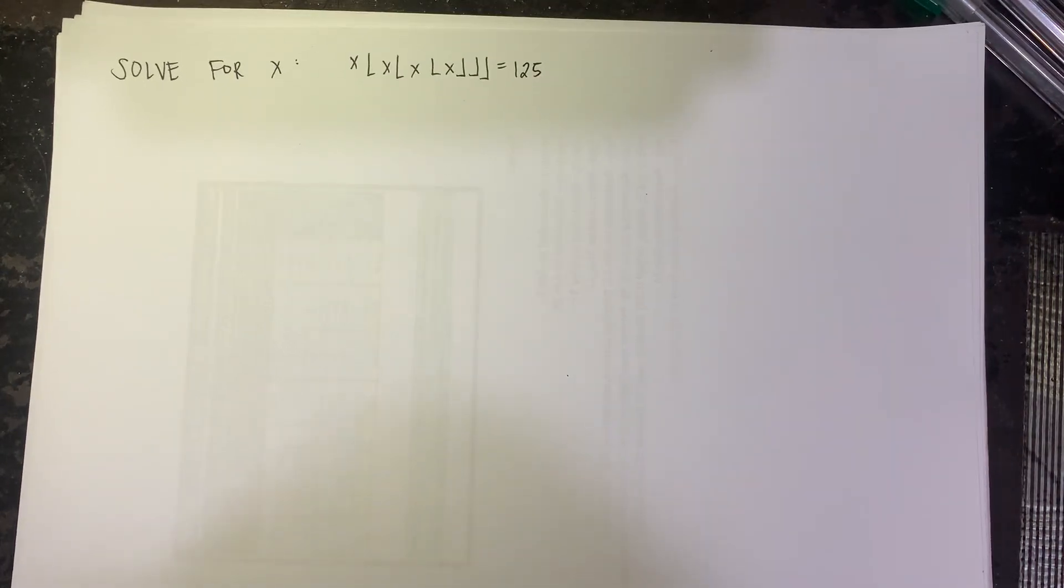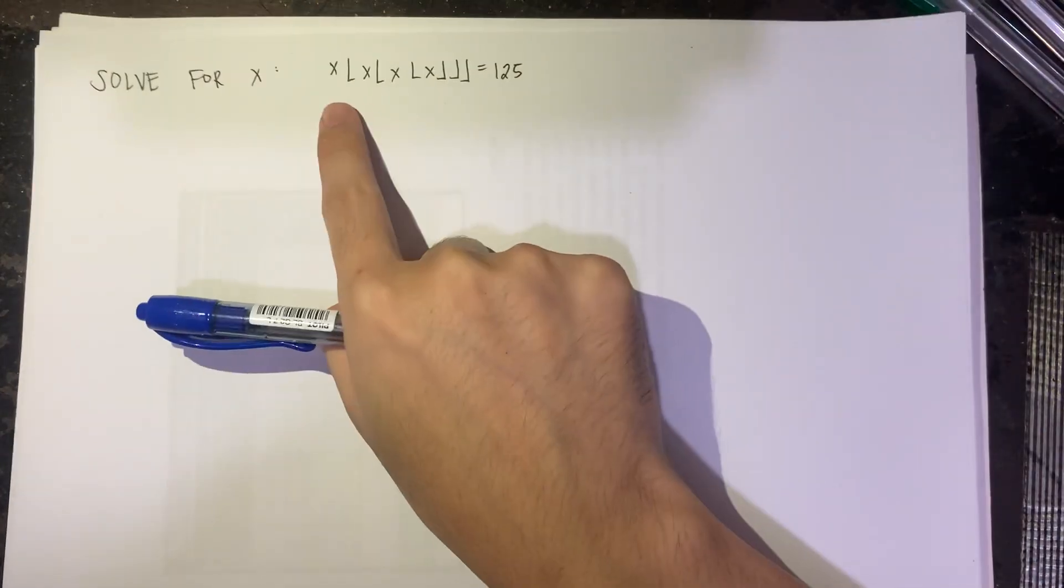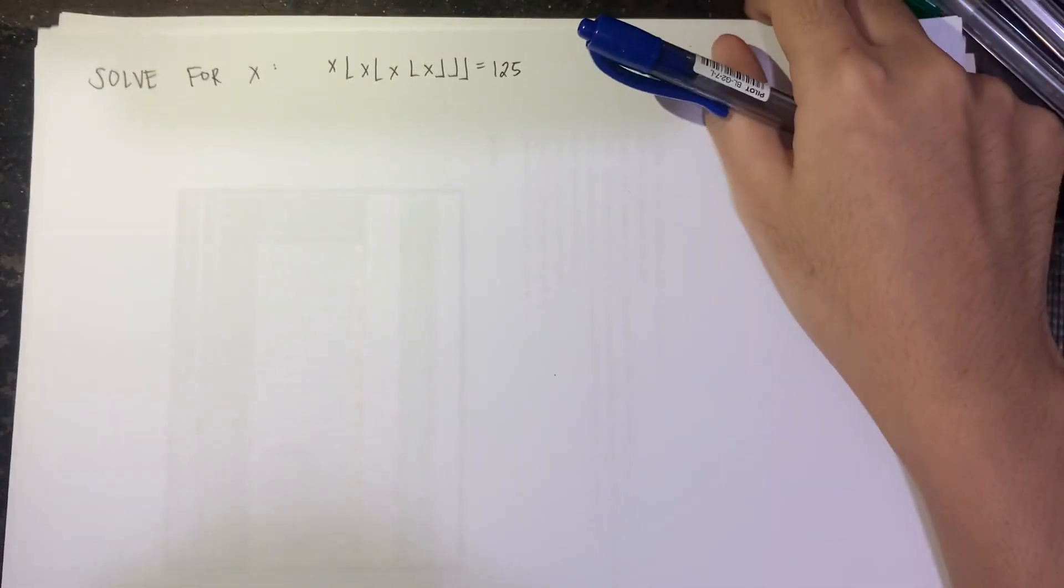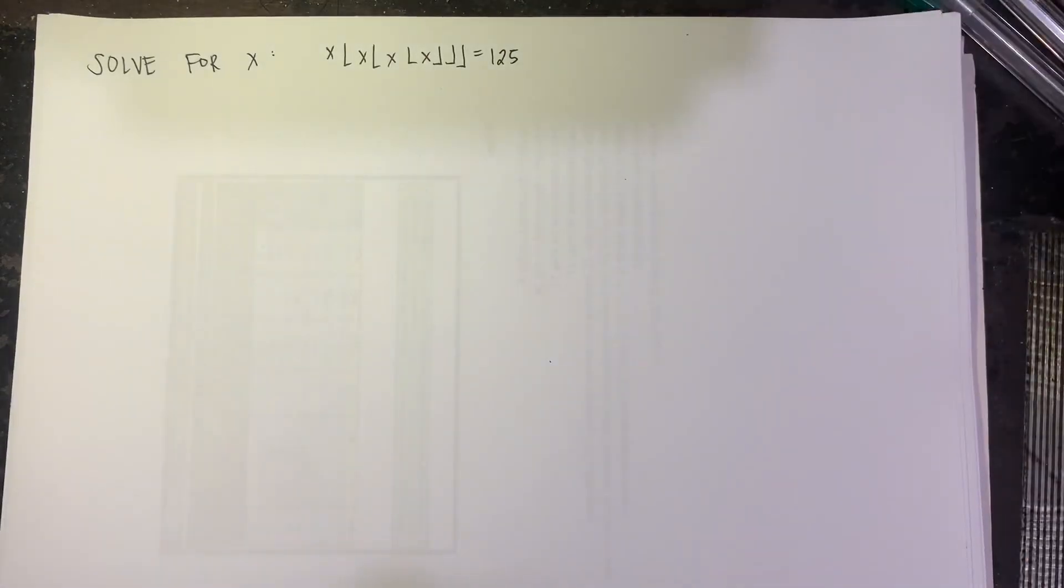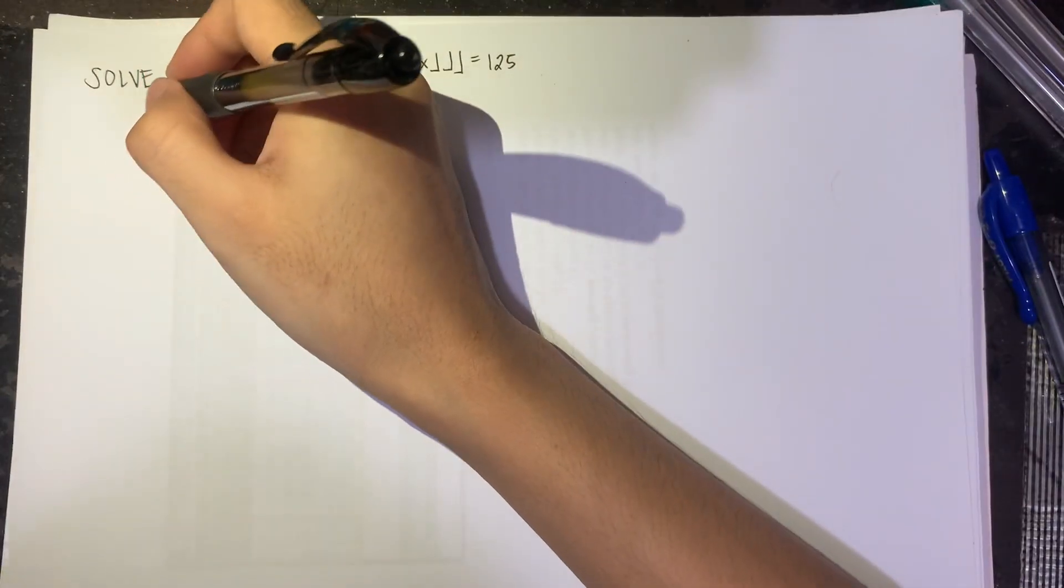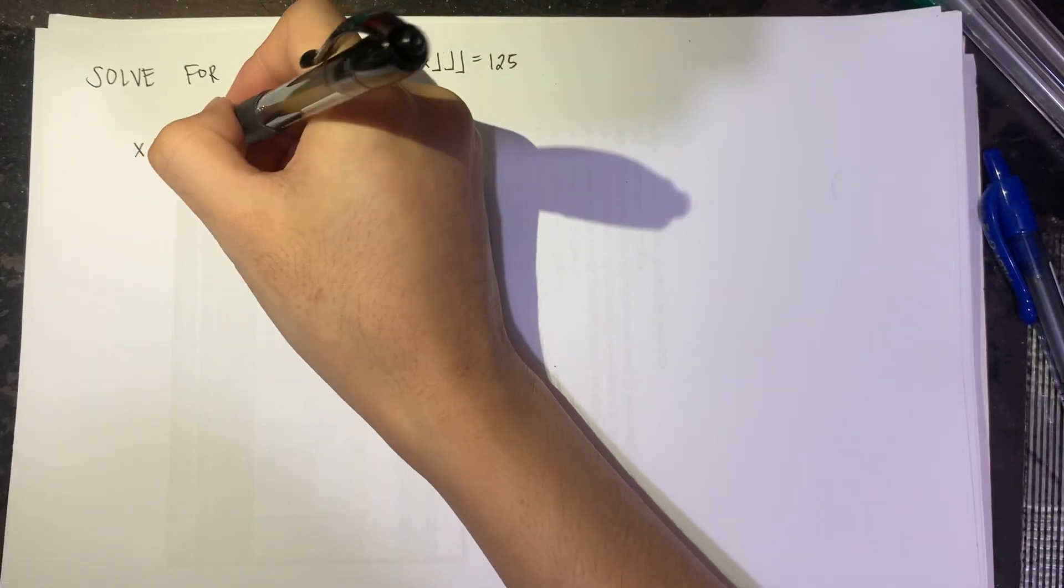Hello. In this video, we will be solving this nested floor function, which asks for the solutions for this three-layer nested floor function, and this value should be equal to 125. Before actually proceeding to solving this one, let's try to solve something simpler. Let's suppose we are solving for the value or values of x such that x times floor x is equal to 5.